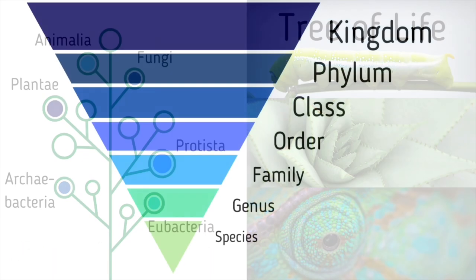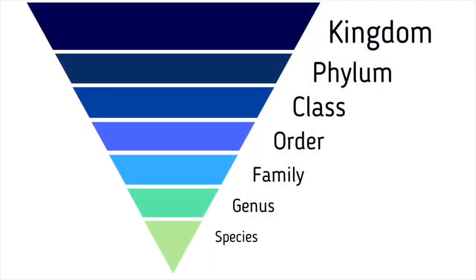Think of classification as an inverted pyramid with seven categories. Kingdom is the largest and most broad category. You may have heard of the animal kingdom — that's a great example and includes every single animal on earth. Moving down the pyramid, the categories start to become more specific, eventually ending at the species level.